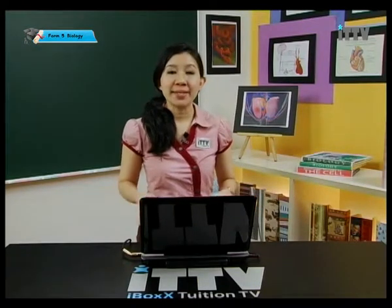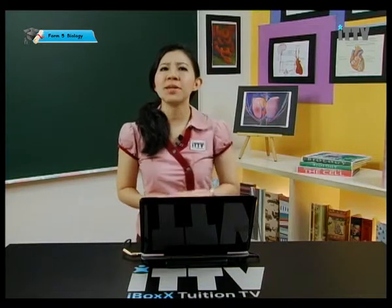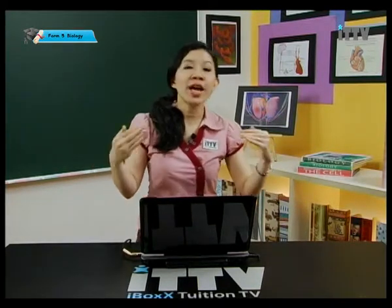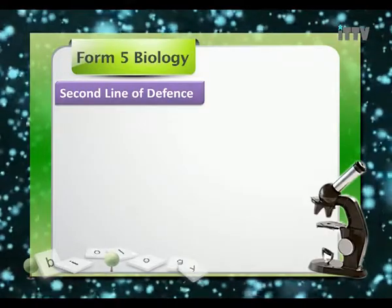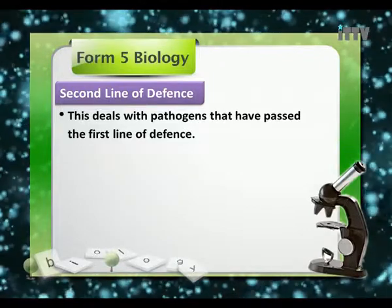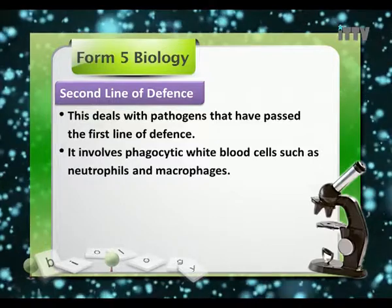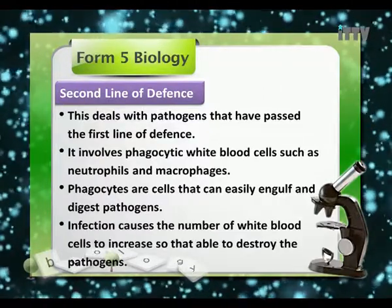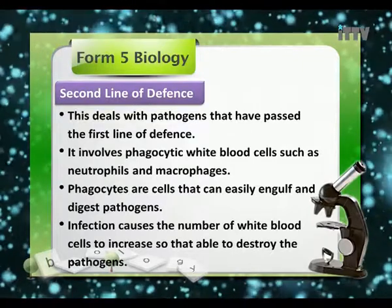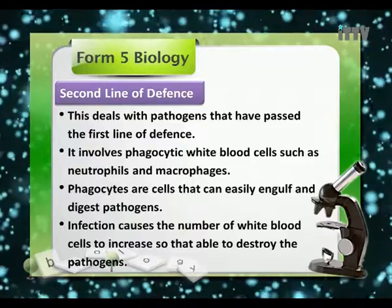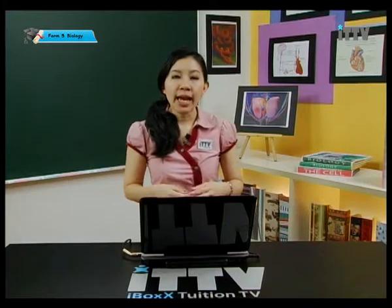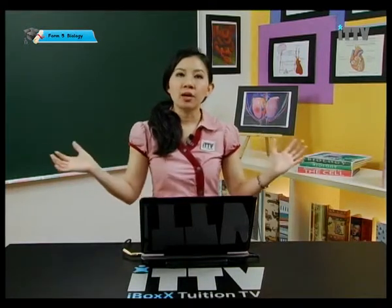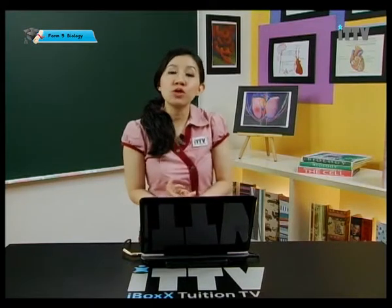So the first line of defense consists of the skin, mucous membranes, and lysozymes in tears. Let's move on to our second line of defense. What happens if the microorganisms have passed and managed to evade the first line of defense? This second line deals with pathogens that have passed the first line, and it involves phagocytic white blood cells such as neutrophils and macrophages. Phagocytes are cells that can engulf and digest pathogens, and infection causes the number of white blood cells to increase to destroy the pathogen.